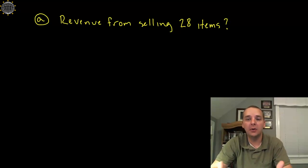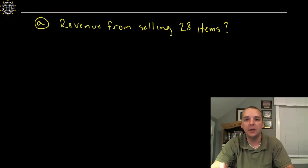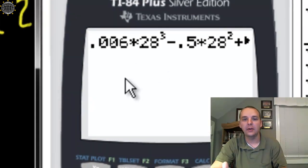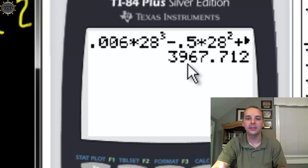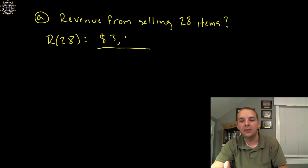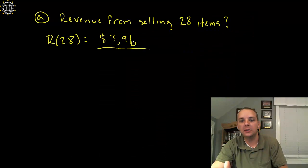So here's a very typical part A: what's the revenue if you sell 28 items? This is a pretty easy question. If this is the revenue function from selling X number of items, very simply we would just be plugging 28 into the revenue function. So we'll take R of 28, plug it in and we'll get an answer. Alright, and here I've got out my calculator here, and just to save us a little bit of time I went ahead and typed everything in, and I got $3,967.71.